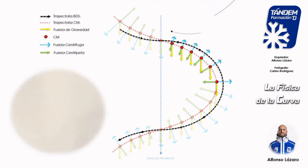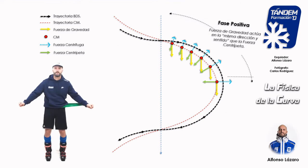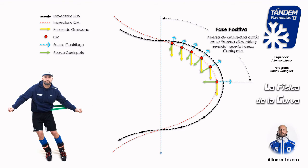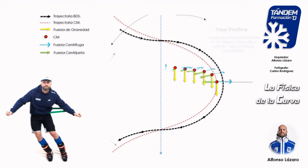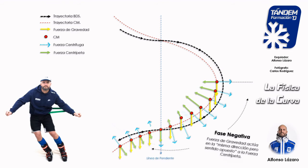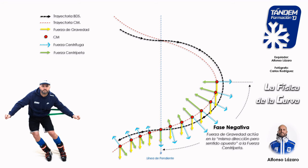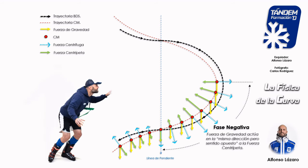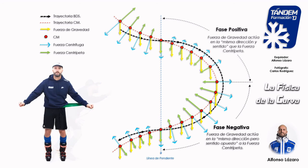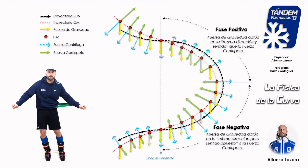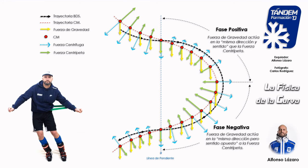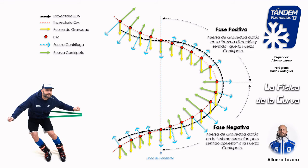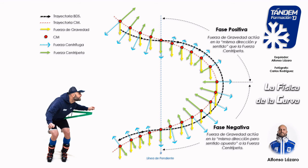Desde un punto de vista físico, como vemos en el diagrama, podemos dividir la curva en dos fases. La fase positiva, en la que simplificando podríamos decir que la fuerza de gravedad actúa prácticamente en la misma dirección y sentido que la fuerza centrípeta, salvo al acercarnos a la línea de pendiente. Y una fase negativa, en la que igualmente simplificando, la fuerza de gravedad actuaría prácticamente en la misma dirección pero sentido opuesto a la fuerza centrípeta, salvo también alrededor de la línea de pendiente. Esa fase positiva es en la que la inercia del esquiador a salirse de la curva es mínima y, por tanto, también lo es la fuerza centrípeta que debe realizar para mantenerse en su trayectoria.